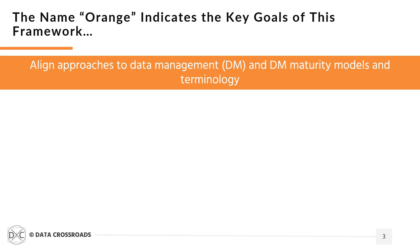I was looking for a name for a hybrid fruit. Do you know that an orange hasn't been created by nature, but by humans? This delicious, sweet, juicy fruit is a hybrid of two other fruits — a pomelo and a mandarin. The orange symbolizes my attempts to cross the pomelos of data management meta-models and the mandarins of data management maturity models, and create a new flavor as a result.